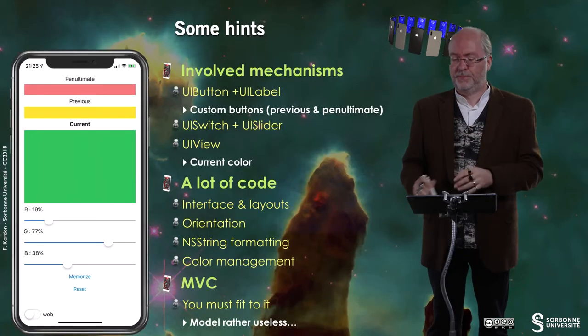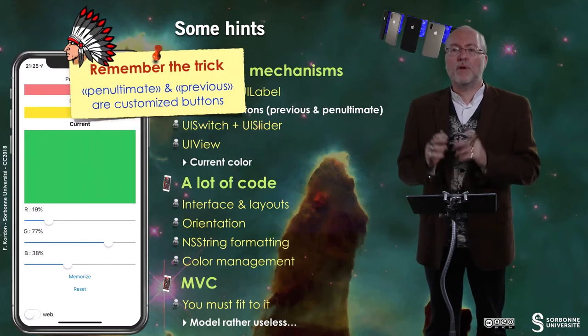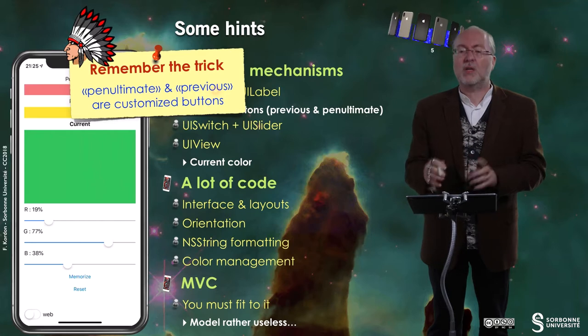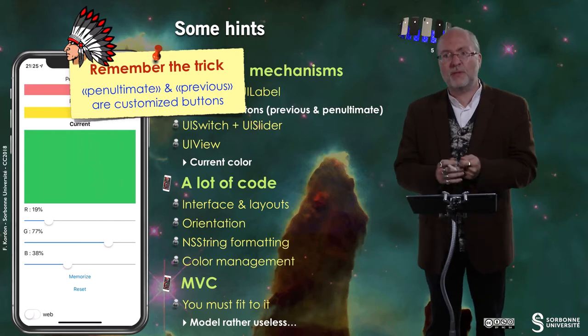You have to separate the view from the control part. Remember the trick that the penultimate and previous views are customized buttons, and you will customize these buttons programmatically — you will see it's very simple. The second trick is to centralize the layout. In my example, I have this draw-in-format function offered by the view, and any display is localized there. It avoids you repeating code everywhere, because when you have to change a detail then you'd have to change it in several places, which in terms of maintenance is not reasonable. Also, you have three sliders here but just one action for the three sliders — generally speaking, it's better to maximize the shared code.